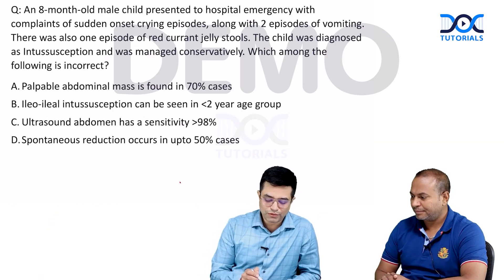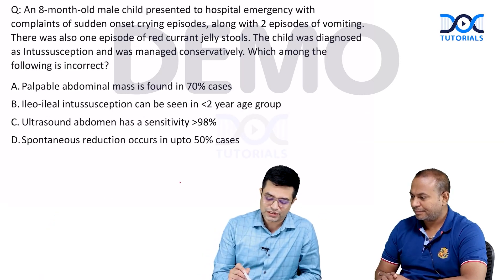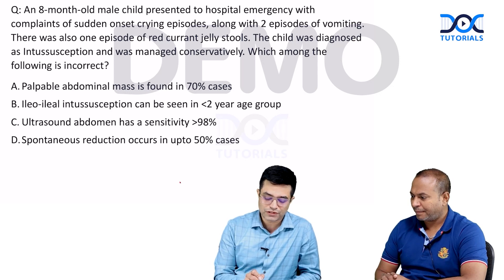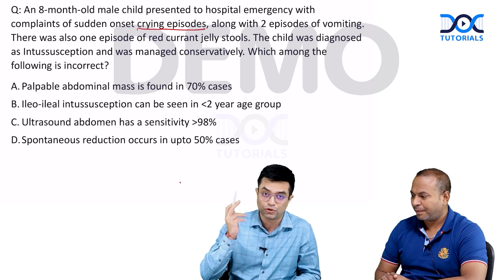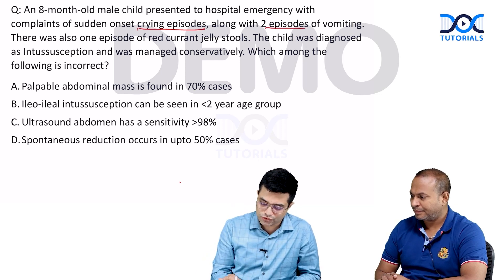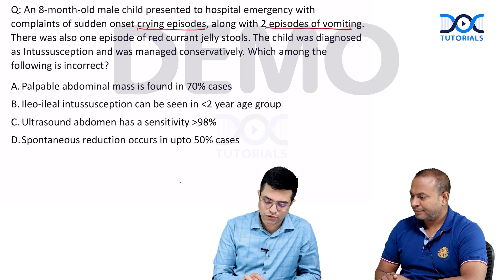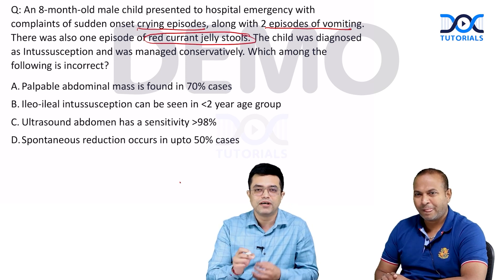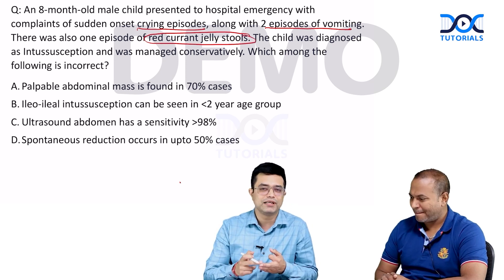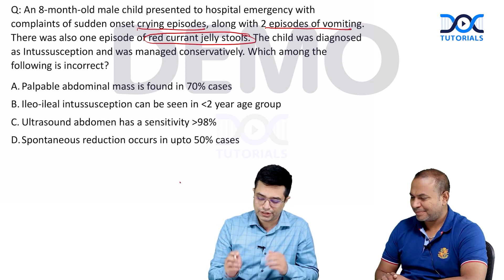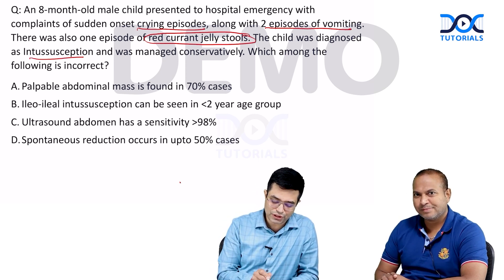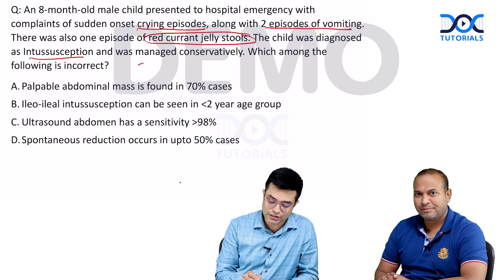The question says: an 8-month-old male child presented to the hospital emergency with complaints of sudden onset crying episodes — think of probable abdominal pain — along with two episodes of vomiting. There was also one episode of red currant jelly stools. So whenever you have an infant with vomiting, abdominal pain, and red currant jelly stools, the diagnosis should be clear. The child was diagnosed as intussusception and was managed conservatively.